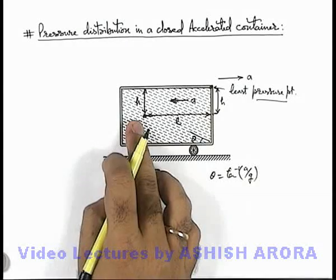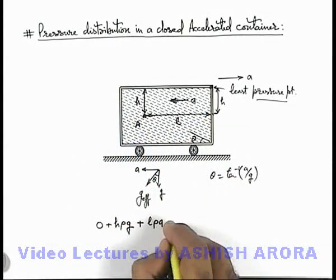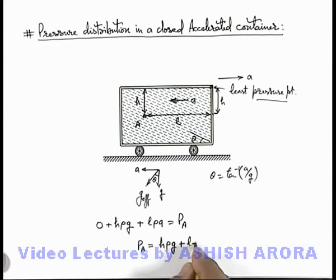So along the horizontal line pressure difference will only be due to the pseudo acceleration, and this is the pressure at point a. So using such equations we can directly write down the pressure at a which can be written as h rho g plus l rho ay.